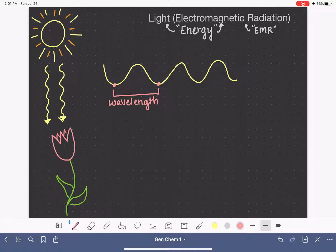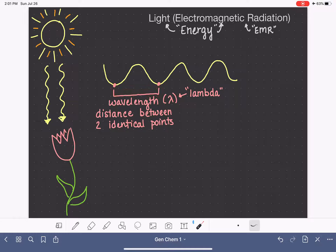So this distance right here, we would call the wavelength. In science, we abbreviate wavelength with the Greek letter lambda. The wavelength is measured in some sort of derivative of a meter, depending on what the actual wavelength is. If it's a very long wavelength, we might choose to measure it in kilometers. If it's a very short wavelength, we might choose to measure it in nanometers.